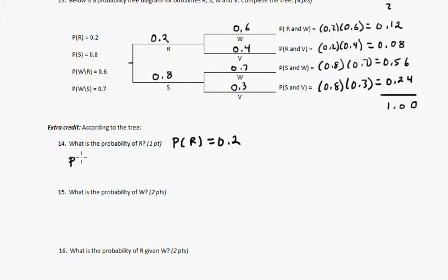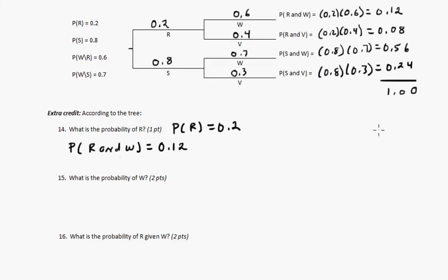So watch for this in the homework. So the probability of R and W is 0.12. Right here. R and W, 0.12. Anyway, both are kind of given.